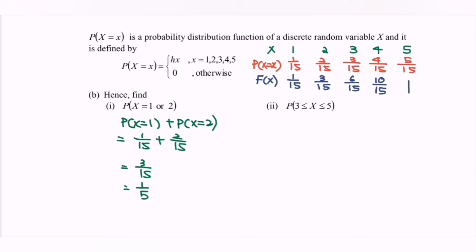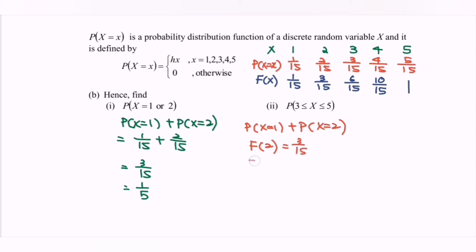As an alternative, we can use the cumulative distribution table. The probability that x = 1 or x = 2 equals P(x=1) + P(x=2), which can be denoted as F(2). Referring to the table, F(2) = 3/15, so the answer is 1/5.